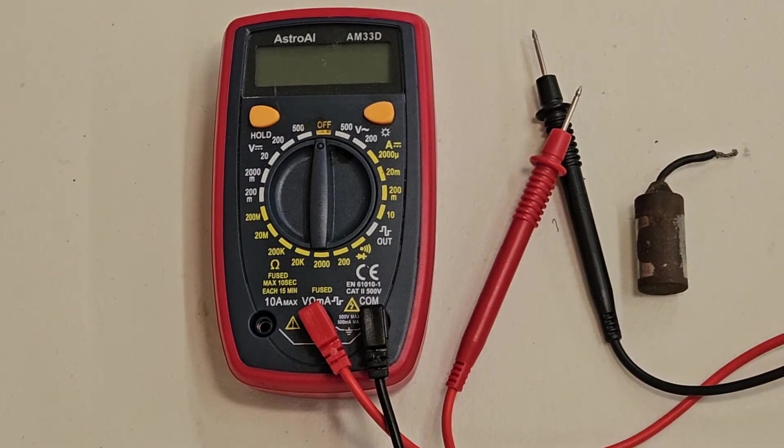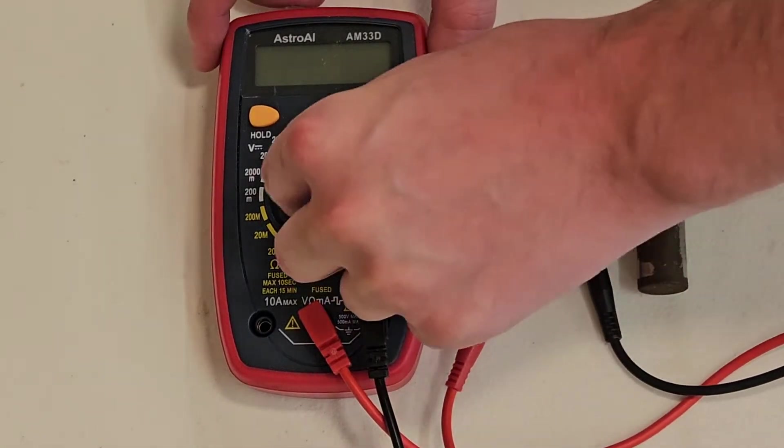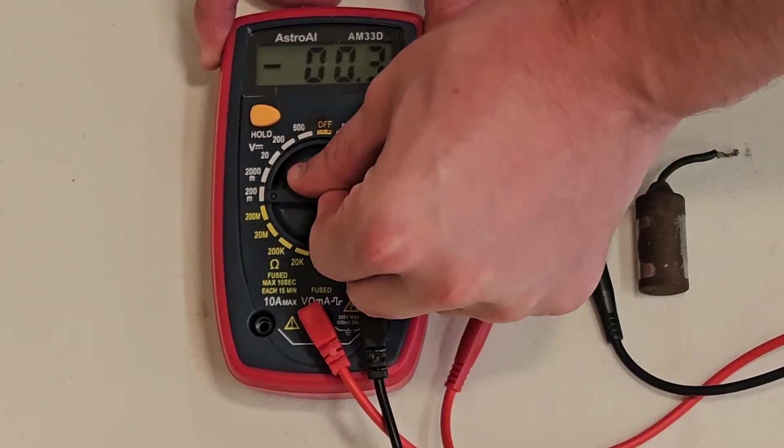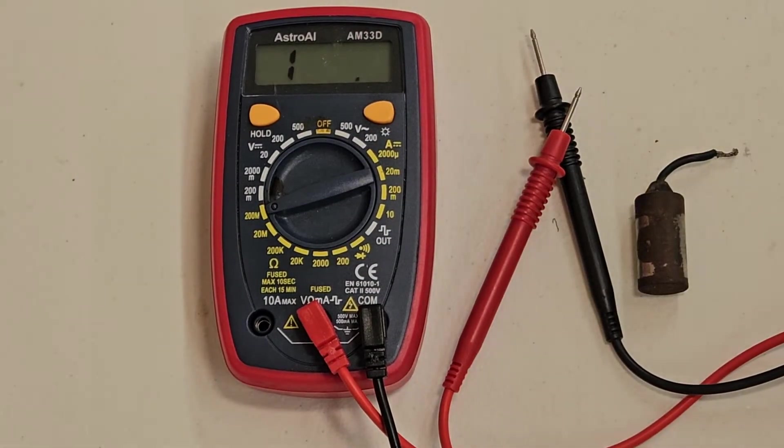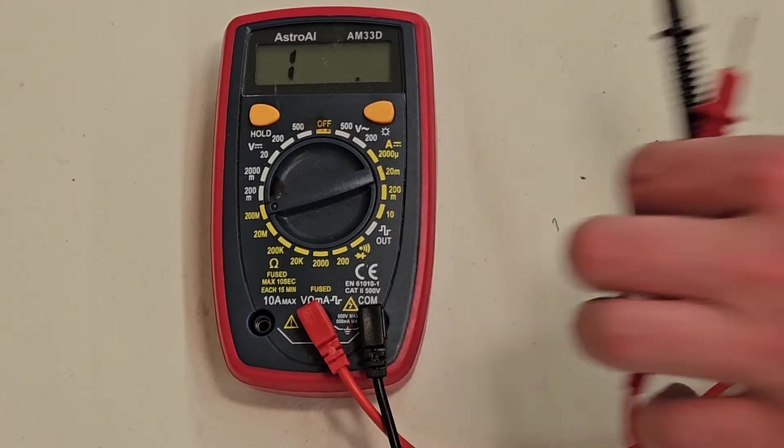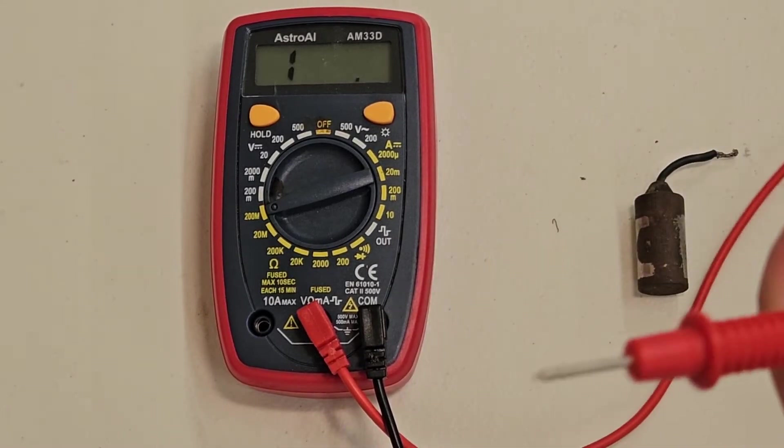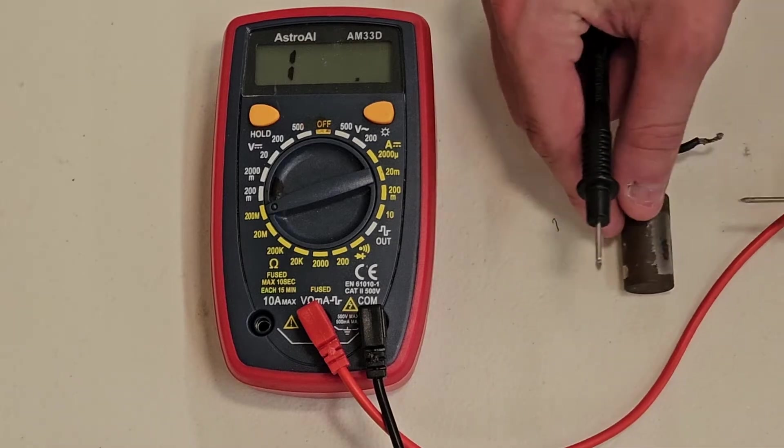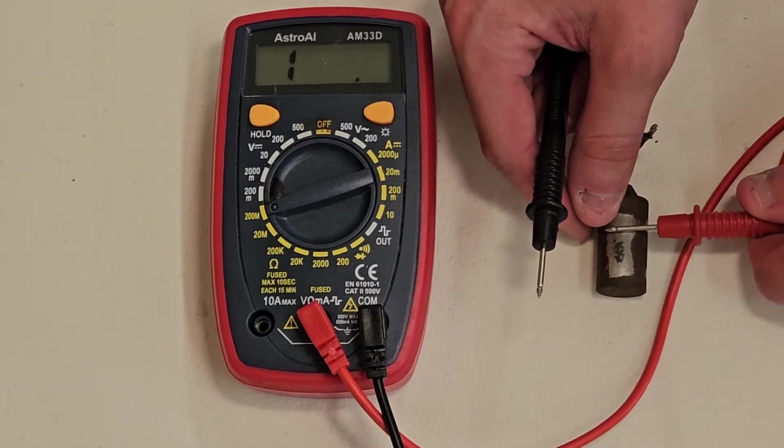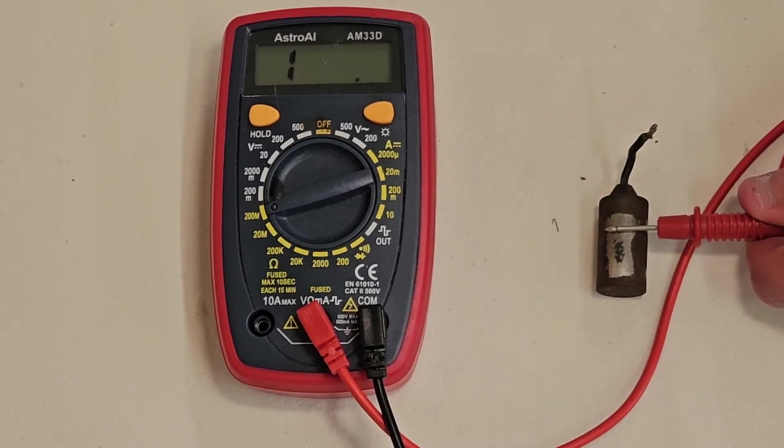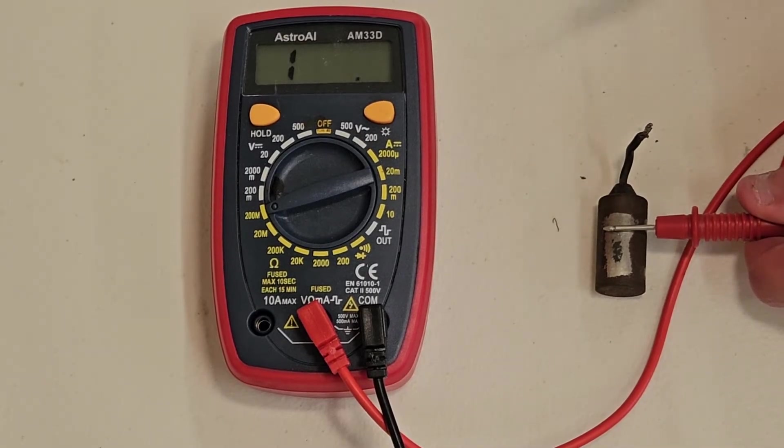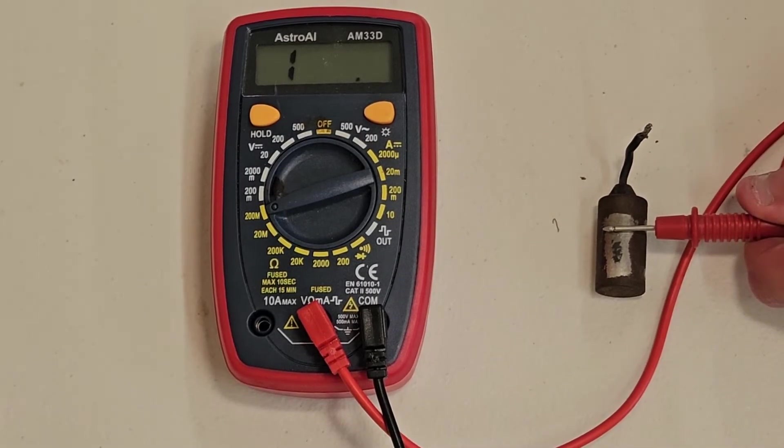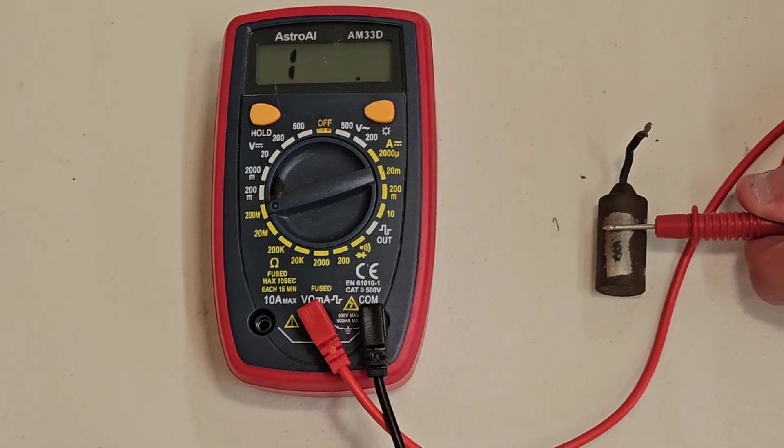The first thing you do is set the multimeter to resistance. We'll set it to 200M. Take your leads and set the red one on the casing. You'll need to find a clean spot. You can see this one's rusted, and I got a little bit of the rust out. Set the red one on the casing, and take your black one and set it here. What you should see when you set this on there is a slow climb up.